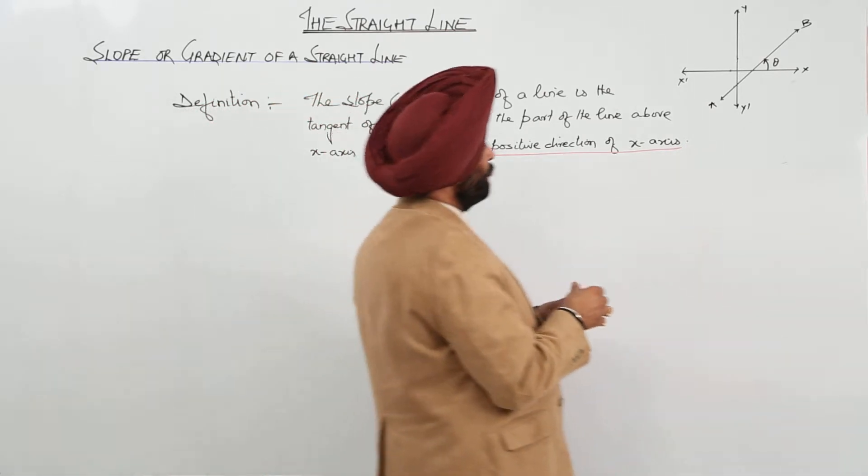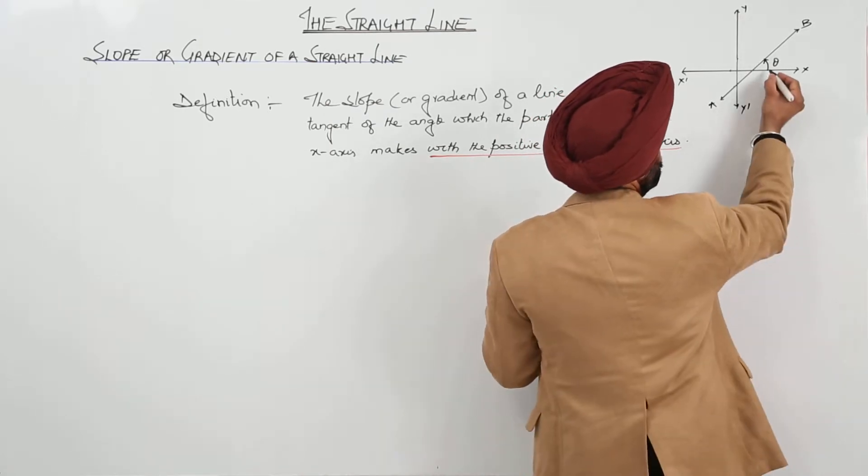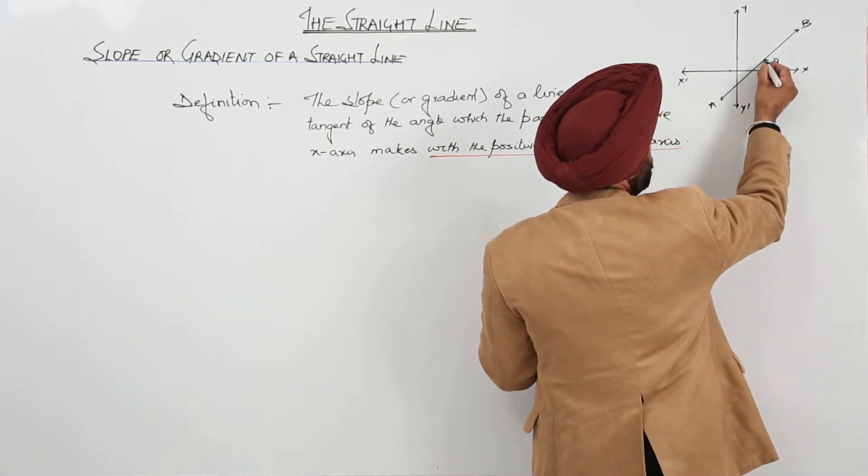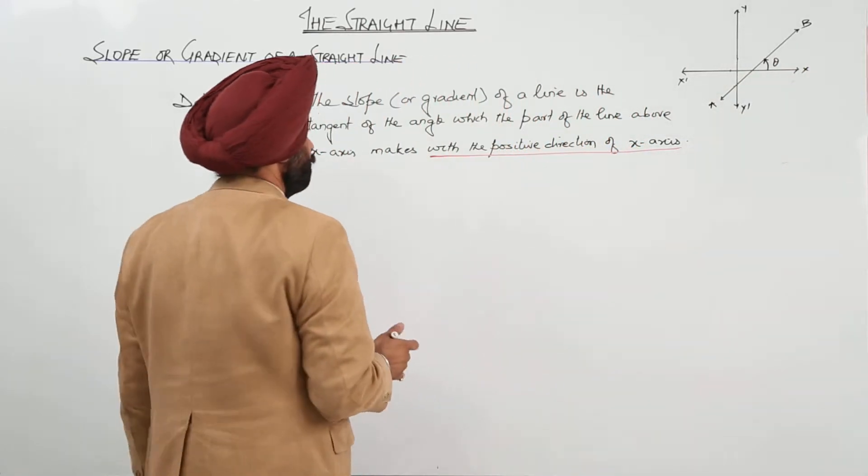Now, here, in this figure, from the positive direction, starting from here and covering this much distance, this is called the slope. This is theta.